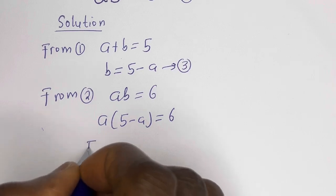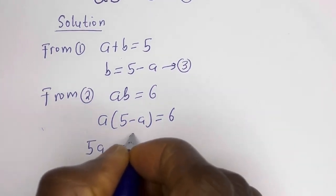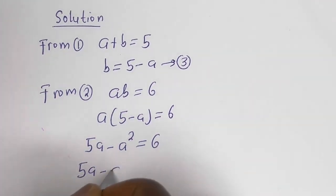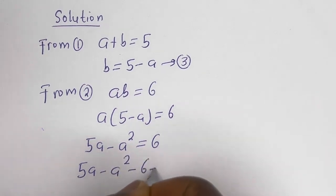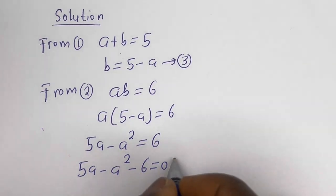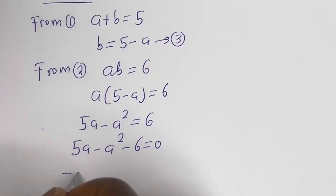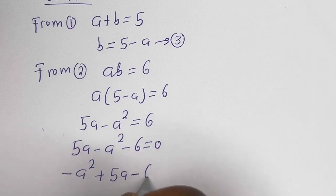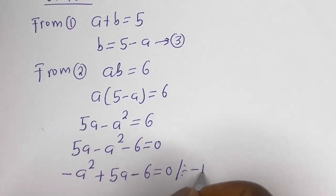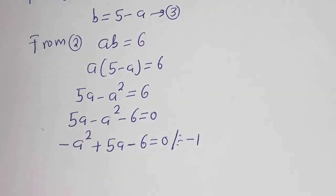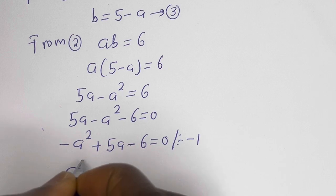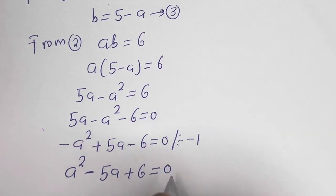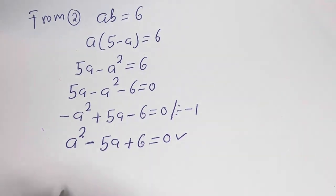Expanding, this gives 5a minus a squared is equal to 6. Rearranging: 5a minus a squared minus 6 is equal to 0, which is minus a squared plus 5a minus 6 equals 0. Dividing all through by minus 1, we get a squared minus 5a plus 6 is equal to 0. This is a quadratic equation — let's solve this.